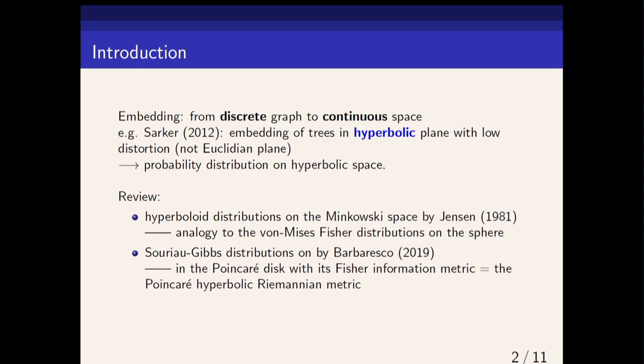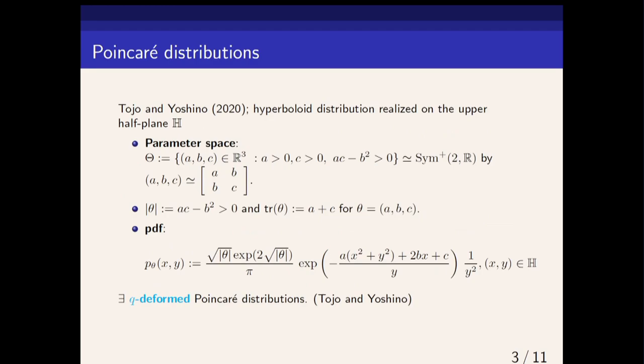Frédéric Barbaresco in 2019 also defined what is called the Suyo-Gibbs distribution on the Poincaré disk using this method of invariant, where you have the Fisher information metric that coincides with the Poincaré hyperbolic Riemannian metric for that family of distributions.